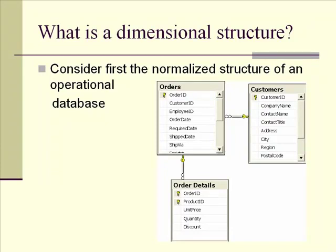What is a dimensional structure? First, let's consider the normalized structure of a typical operational database. Here's a small example. We're interested in collecting orders for widgets. We design our tables in the following manner: we have an order table to collect the master information for the order — the information that pertains to the order as a whole. And then we have the order detail table that contains the information for each item, each widget that might be purchased: the quantity, the unit price, and so on. We make sure that we don't duplicate customer information or order date on each detail line — we collect that only once in the orders table.